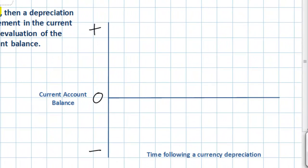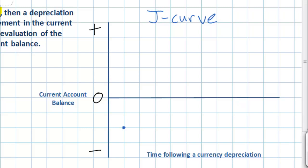Let's look at our graph over on the right here. This graph is eventually going to be our J-curve diagram, and we'll explain where the J comes from throughout this lesson. Let's take a country, for example the United States, which currently has a current account deficit of a couple hundred billion dollars.